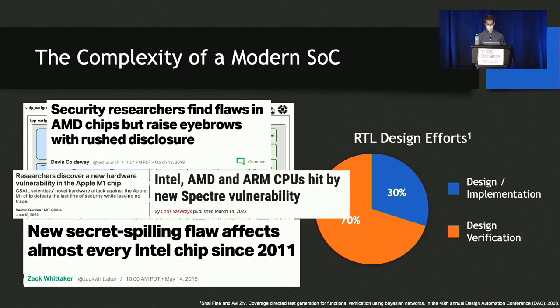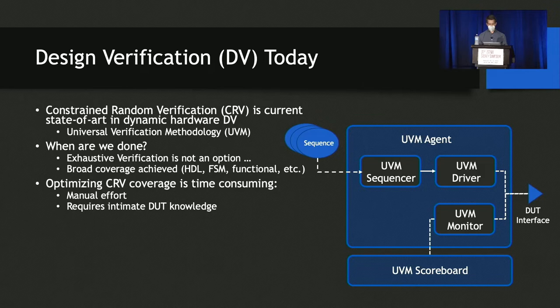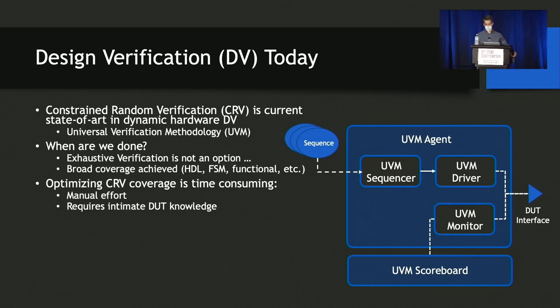To identify flaws in complex SoCs before tape-out, hardware engineers often deploy several pre-silicon verification strategies. One popular approach is a dynamic verification technique called constrained random verification, or CRV, and it's implemented in one of the most widely used DV frameworks known as UVM. Here, I show a typical architecture of a UVM-style test bench, which, at a high level, generates random sequences of inputs, drives them into the DUT, and monitors its response. When using this technique, the question DV engineers often ask themselves is, when are we done? Since exhaustive verification is not an option for large, complex designs, the answer is typically when broad coverage is achieved, for which there are several metrics, including HDL code coverage, FSM or finite state machine coverage, functional coverage, etc.